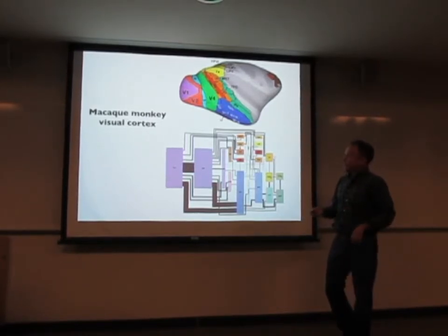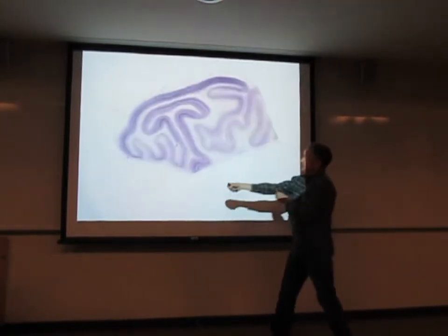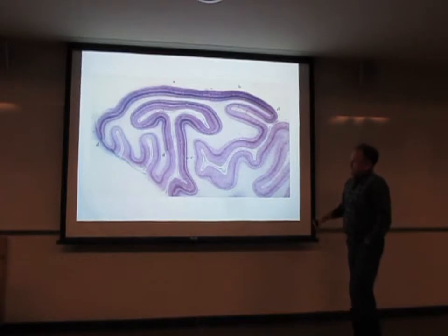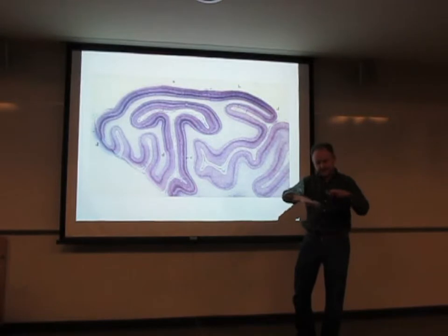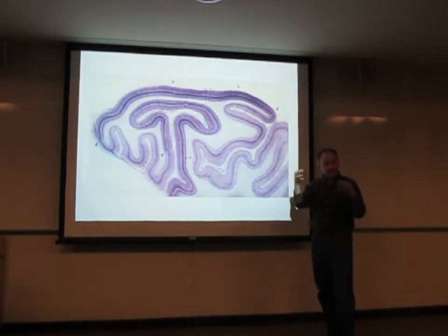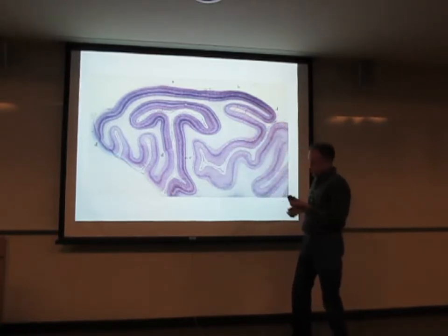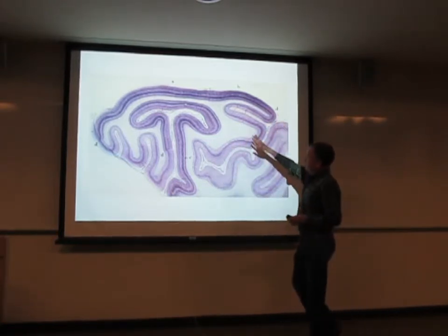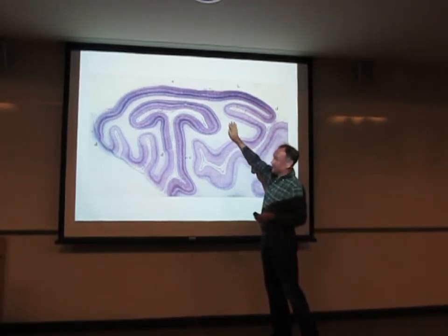If you take a cross-section of the cerebral cortex, what you see is that it's basically a two-dimensional sheet of neurons — intrinsically flat, like a sheet of paper, two millimeters thick. That's where all the neurons live, and the sheet is just folded in on itself, which is what you're looking at when you see all those folds of the brain. All the white matter you see here is just wires connecting all these neurons together — no computation happening there. All the computation is happening within the cortical region.